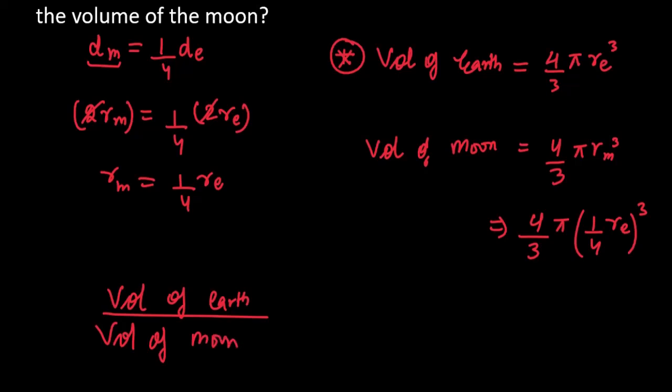Volume of earth, substitute it, is 4 by 3 pi RE cube divided by 4 by 3 pi and here what will come is 1 by 4 cube and RE cube.